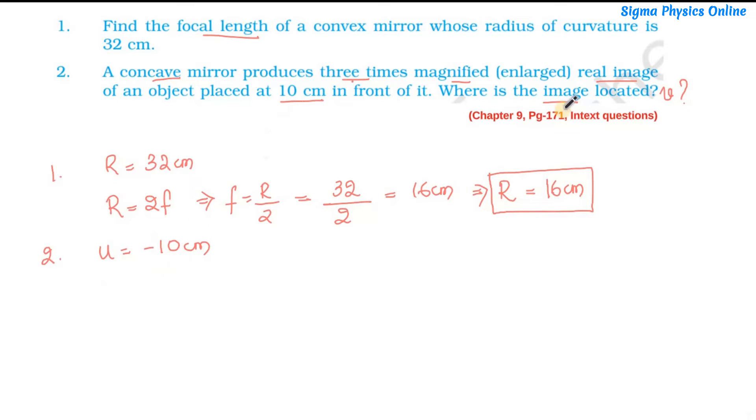Now it's given that the image is three times magnified and it's a real image. So our magnification value will be minus three. This negative sign indicates that the image is real, and real images are always inverted. So the image is real and inverted. The number three denotes how many times it is magnified. Since it's written three times, we have written minus three.